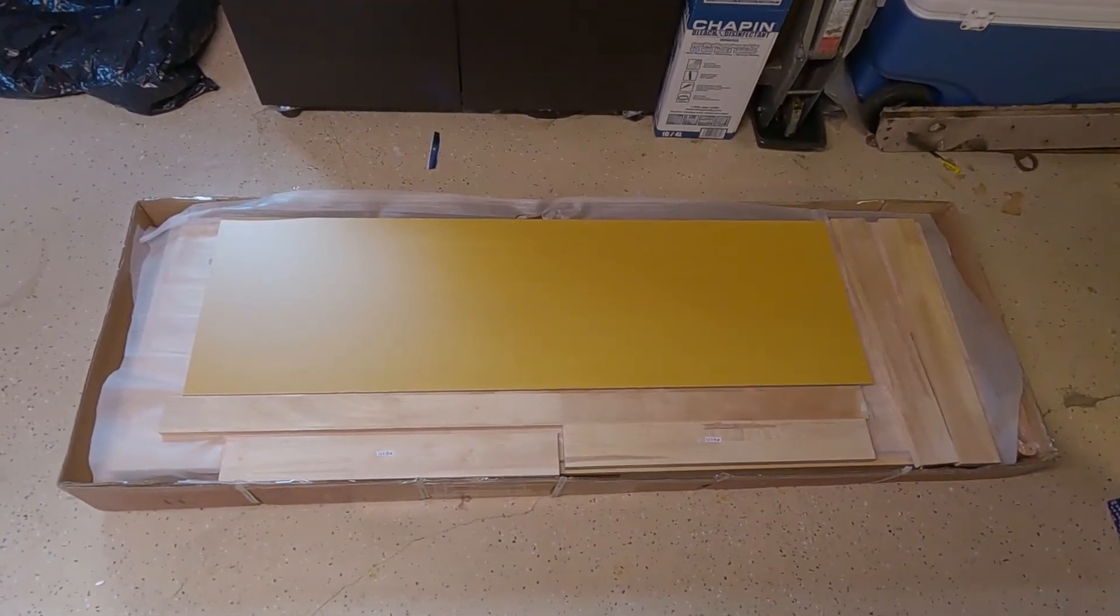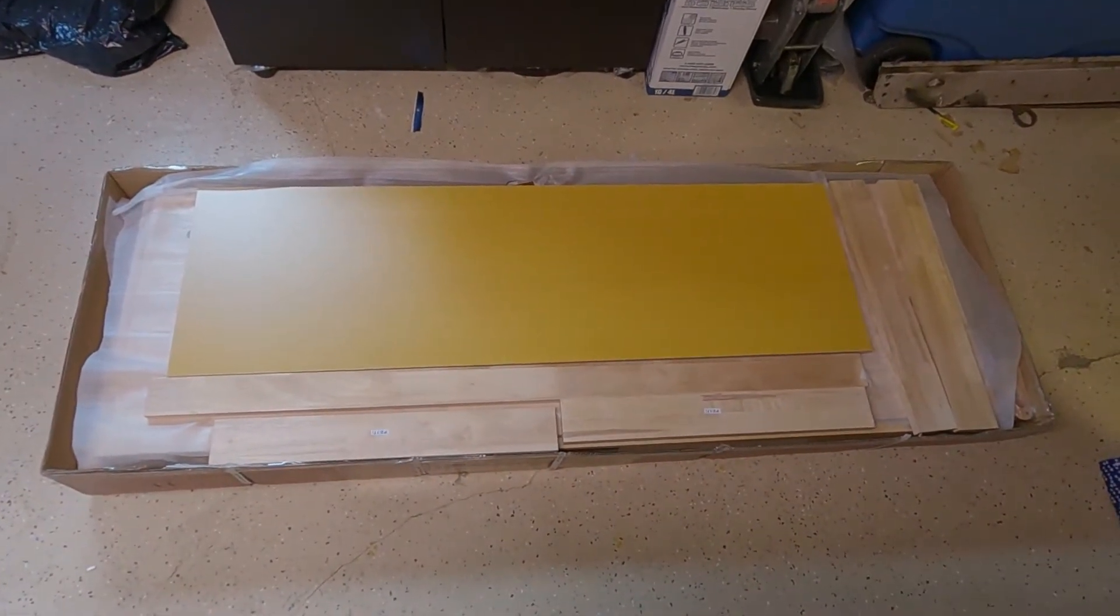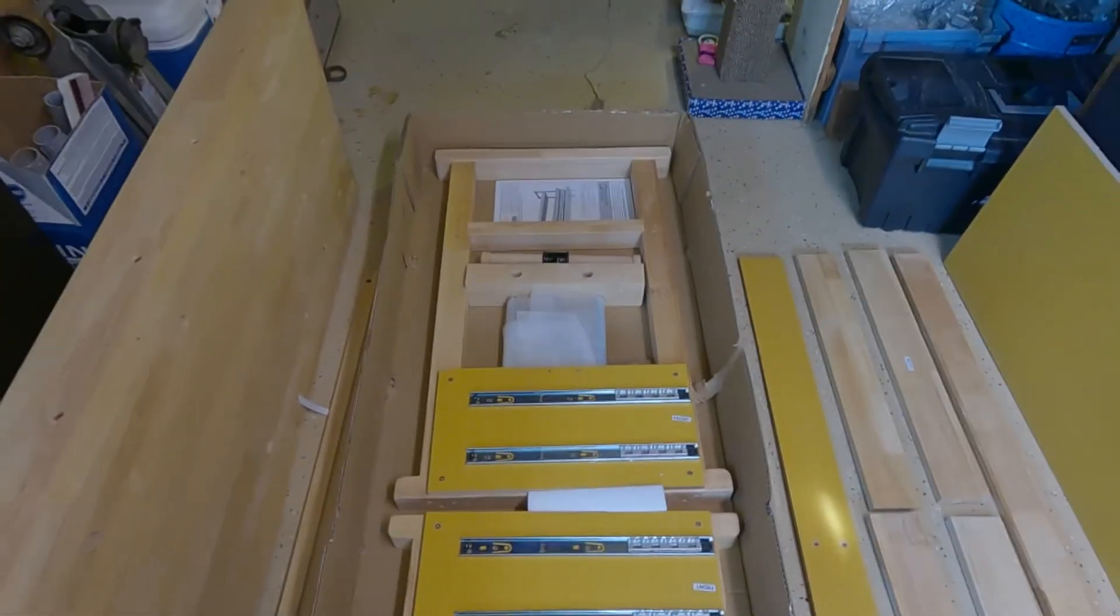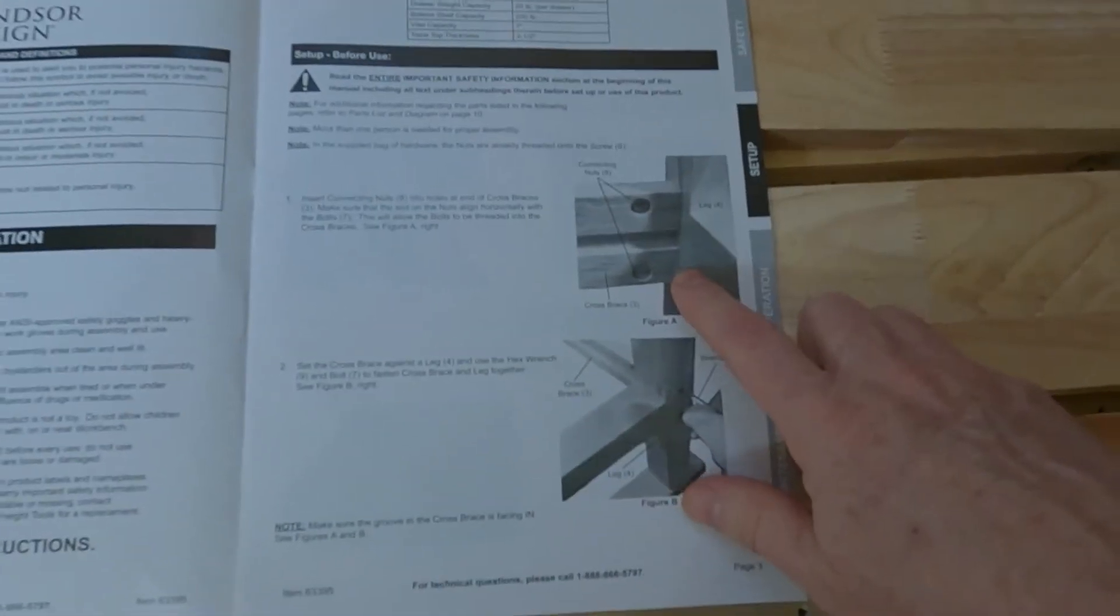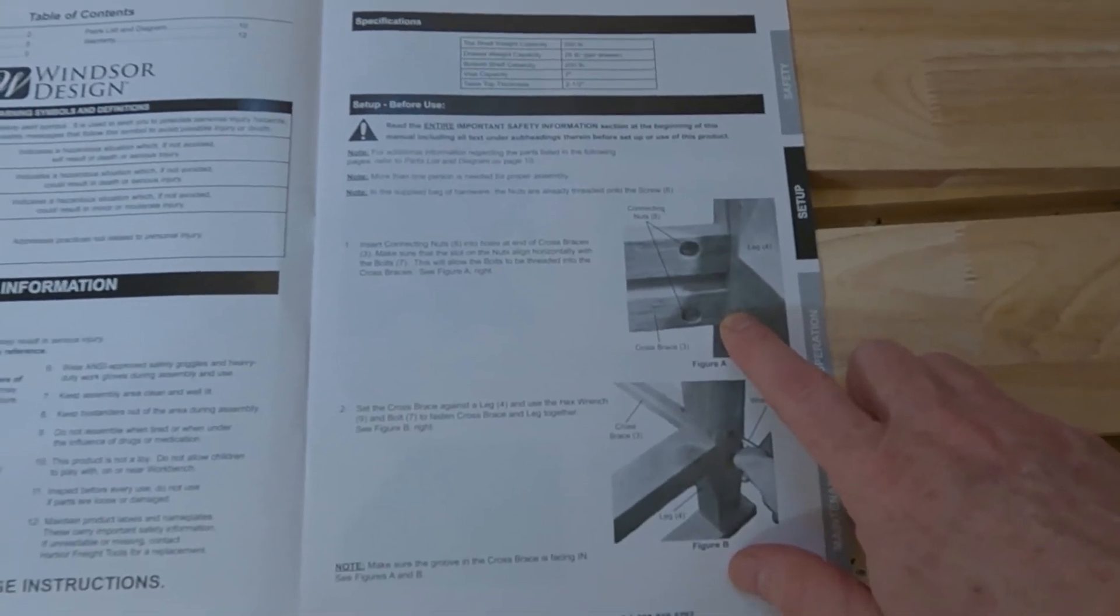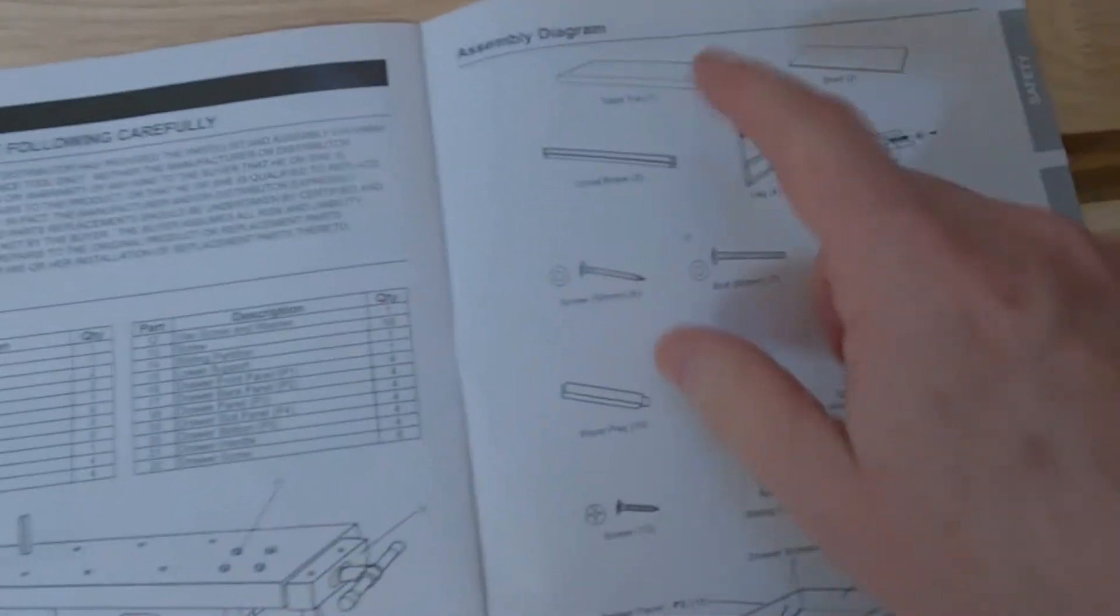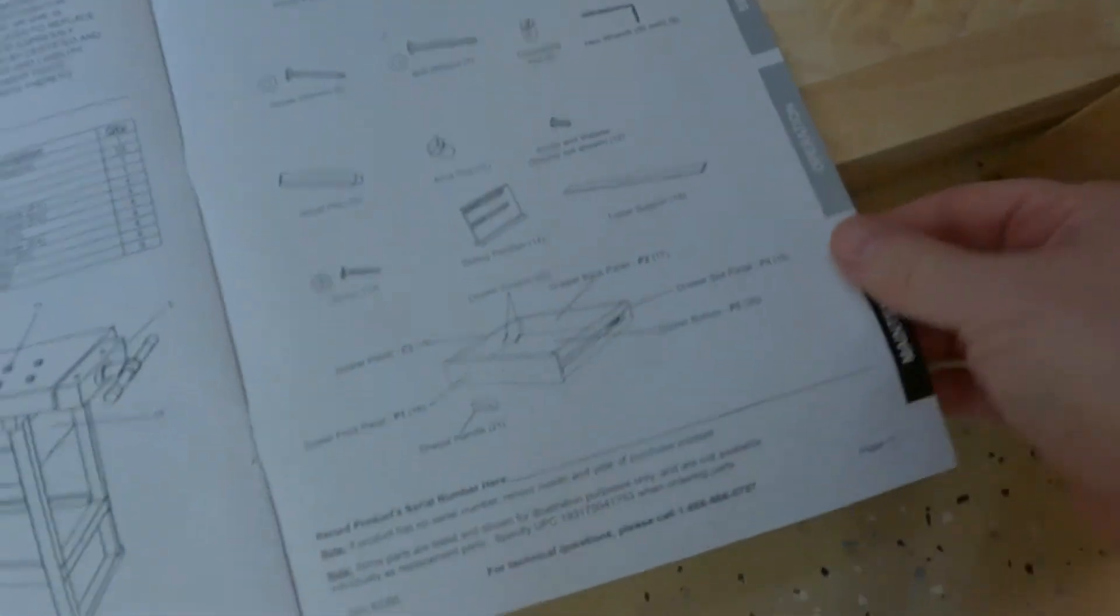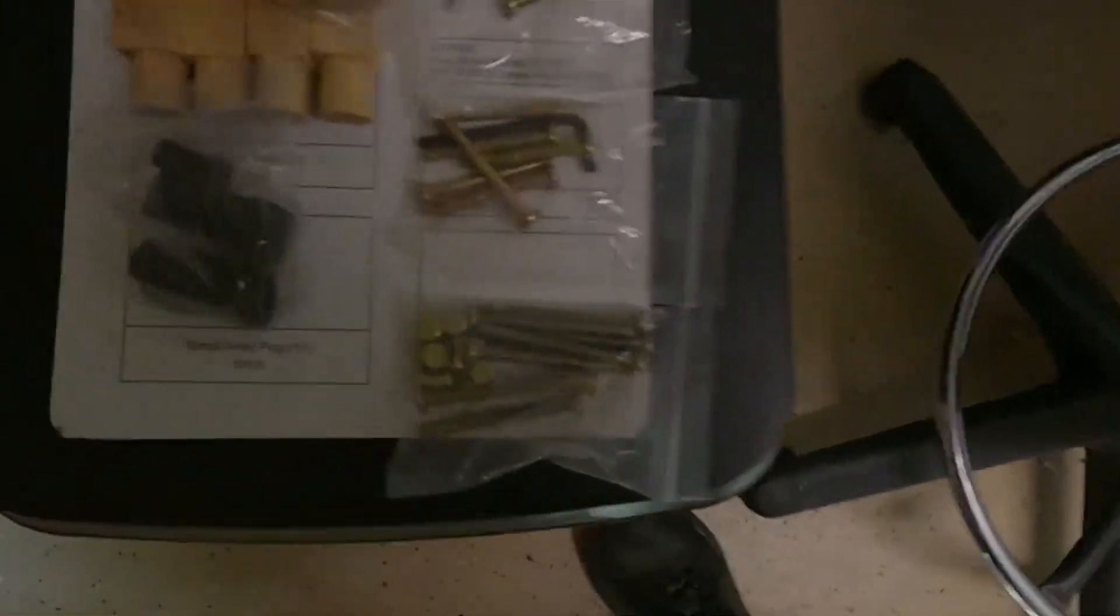So it's basically like I just went to Ikea, man it smells really good. All right, so step one is insert connecting nuts eight into holes at the end of cross braces three. The cross brace is this piece with a little slot cut in it right here, and nut eight is going to be these right here.